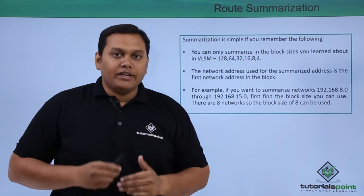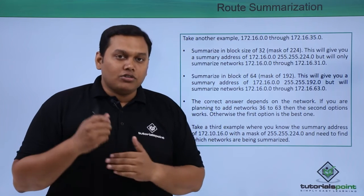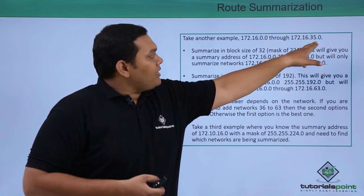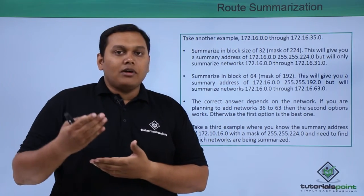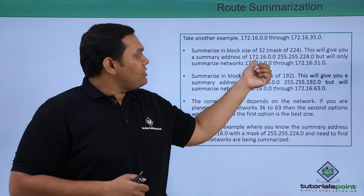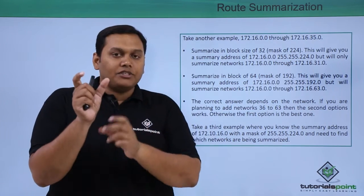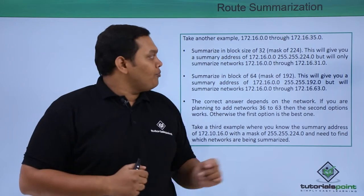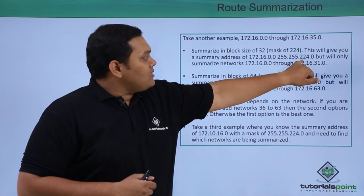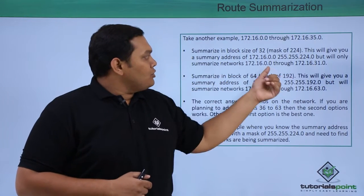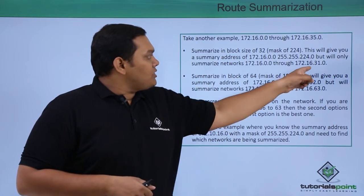Another example: 172.16.0.0 through 172.16.35.0 — how does route summarization work here? The block size is 32 and the subnet mask uses 224 in the third octet. It starts from 172.16.0.0 with mask 255.255.224.0. You can only summarize these networks to 31, because 255 minus 224 equals 31, so from 0.0 to 31.0. Based on the block size, you summarize networks only up to 31.0.